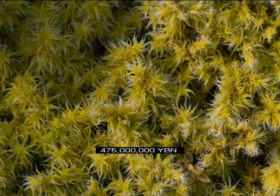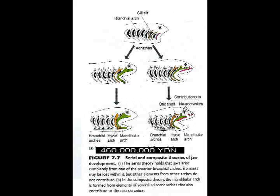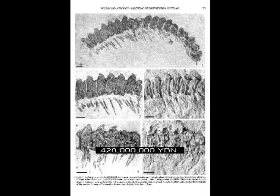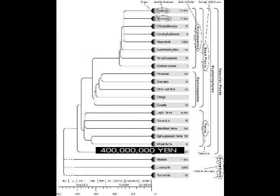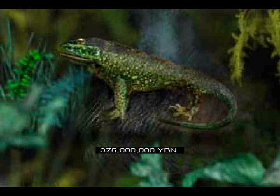Nonvascular plants — liverworts and mosses. Plants live on land. Jawed vertebrates. First tooth. Lung. Animals live on land — arthropods. Vascular plants. First forests. First tetrapods: organisms with four feet — the amphibians.